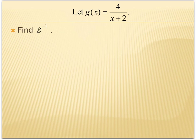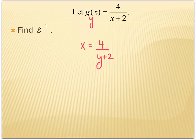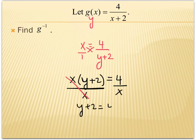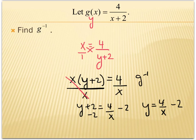Now we're going to look at the function g of x equals 4 over (x plus 2), and find its inverse. Finding the inverse means switching x and y. One method is to treat the equation as over 1 and cross multiply, giving x times the quantity (y plus 2) equals 4. Solving for y, I divide each side by x, giving y plus 2 equals 4 over x. Subtracting 2, I get y equals 4 over x minus 2. So g inverse of x equals 4 over x minus 2.